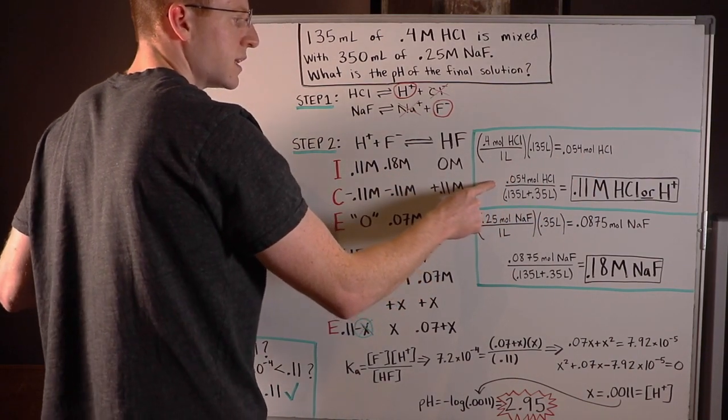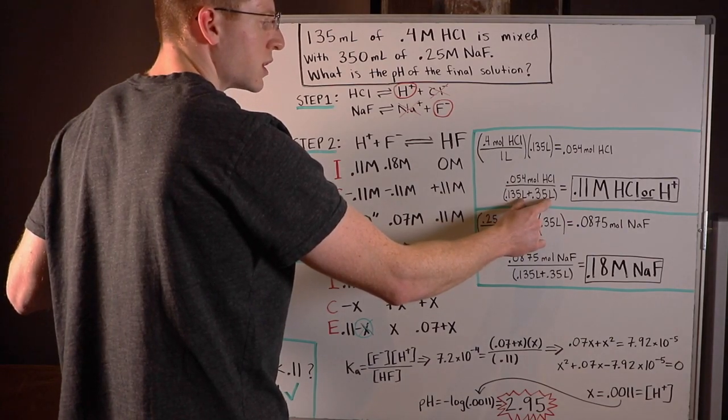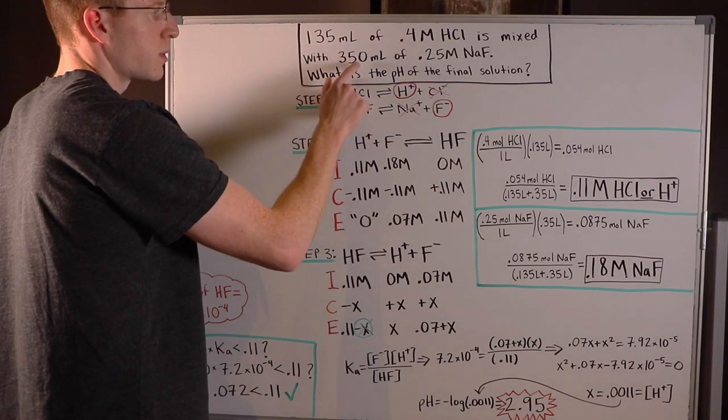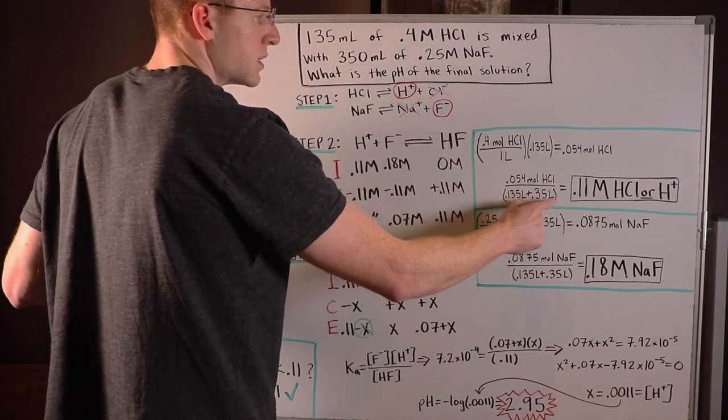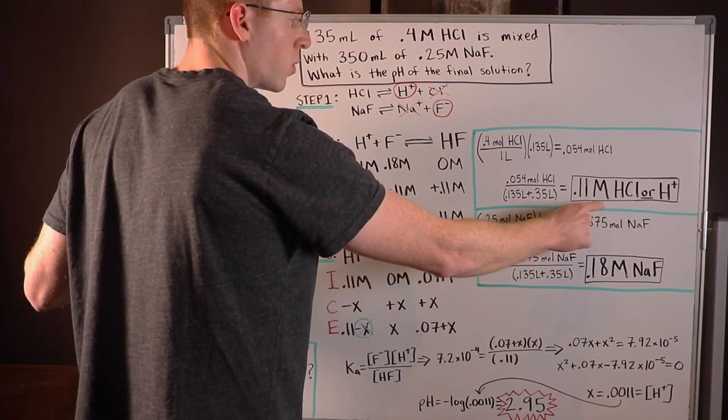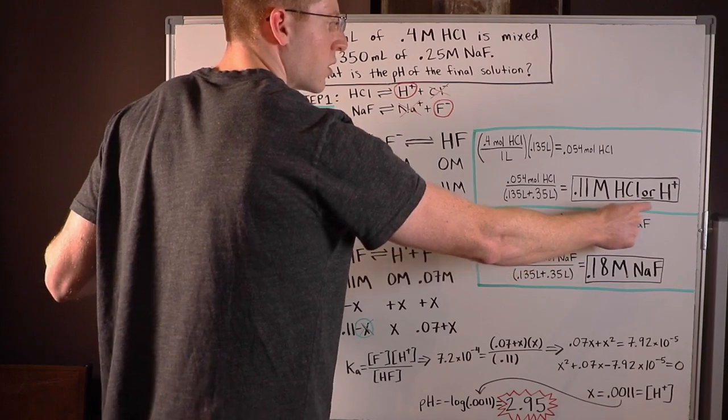And I had to find the amount of moles of HCl so that I can put it over the total liters of our mixed solution, 135 milliliters plus 350 milliliters to get the actual molarity of HCl, which turned out to be 0.11 molar. And note here that I've written this is the molarity of HCl or H plus.